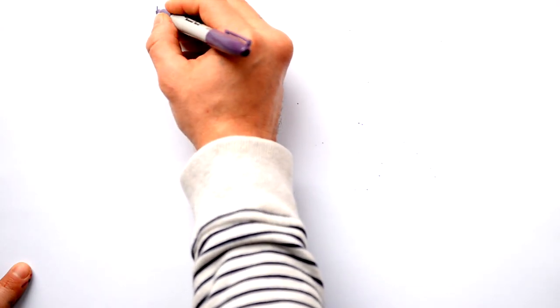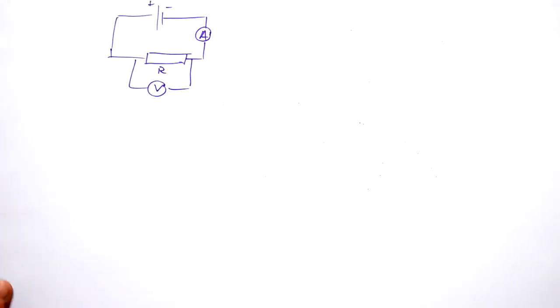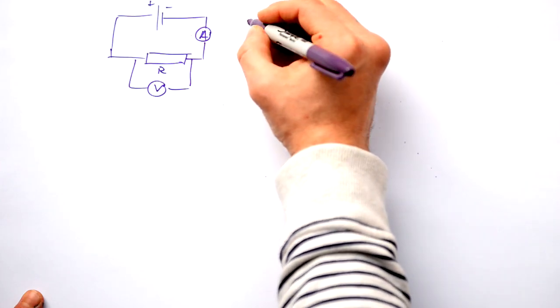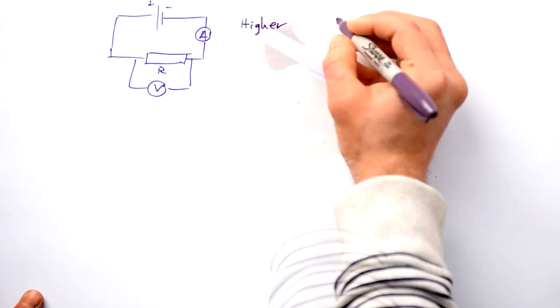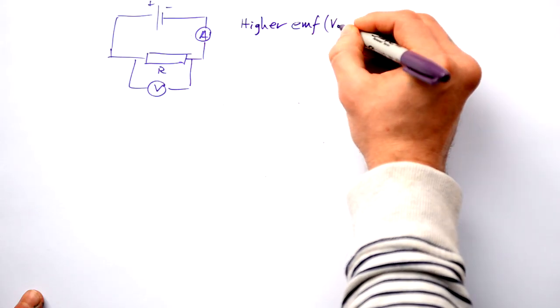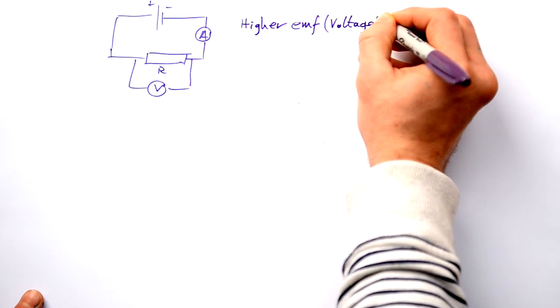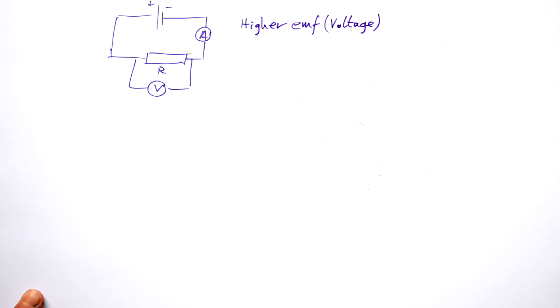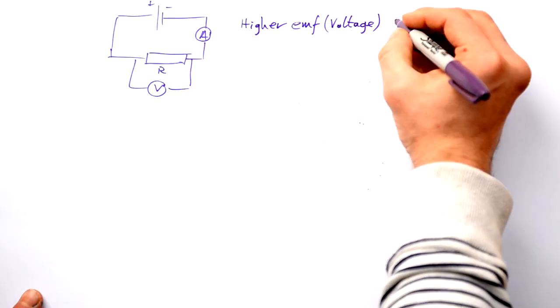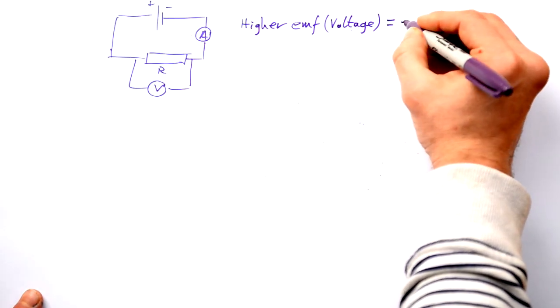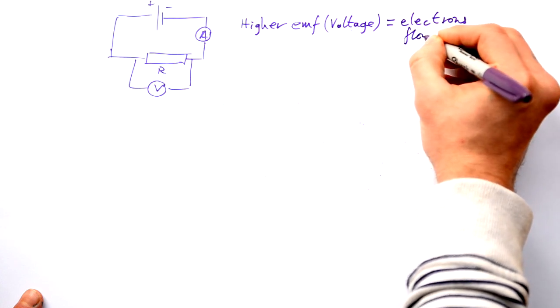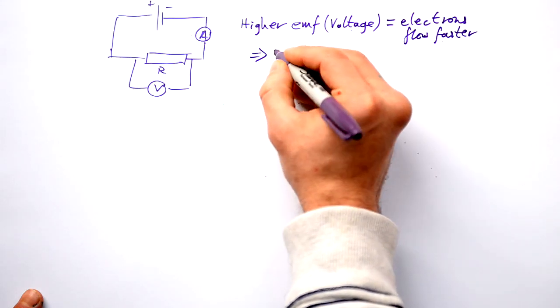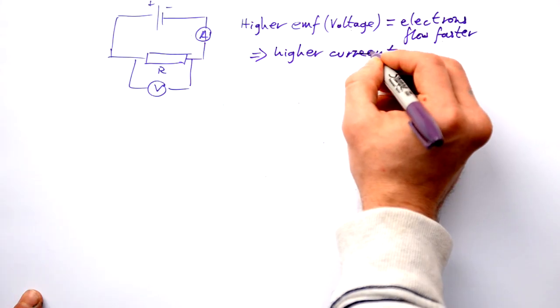So if we have our circuit again here, we also had an ammeter in there as well. Now you should know that the more energy supplied to the electrons, the faster they're going to flow. So higher EMF, I'm going to put brackets there for voltage as well, but technically we should call it EMF, the higher EMF equals electrons flow faster. And that's the same thing as a higher current.